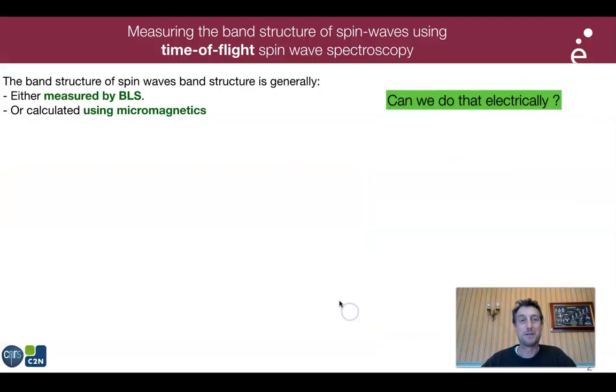This is the outline of my talk. Generally, when people want to measure the band structure of spin waves within a given film or sample, they do it by Brillouin light scattering, or if they know the material parameters, they calculate the spin waves using micromagnetics.